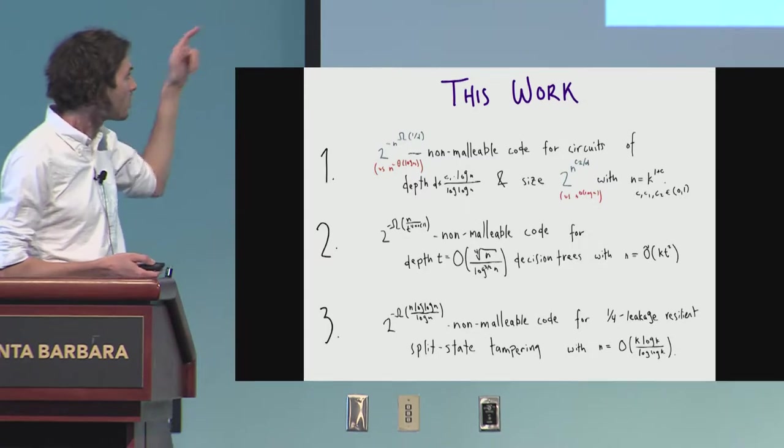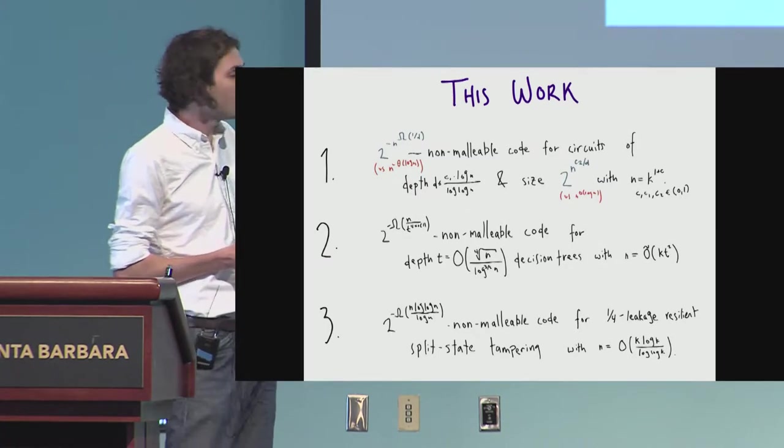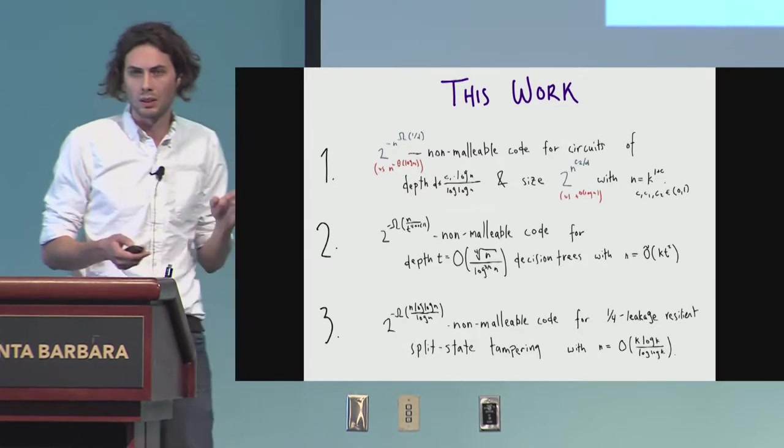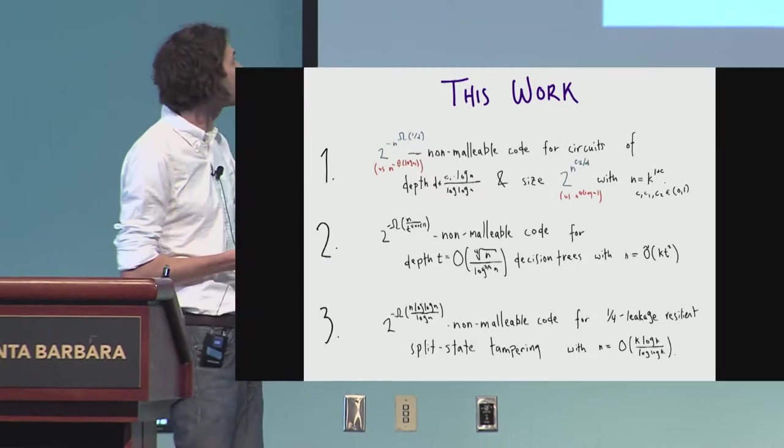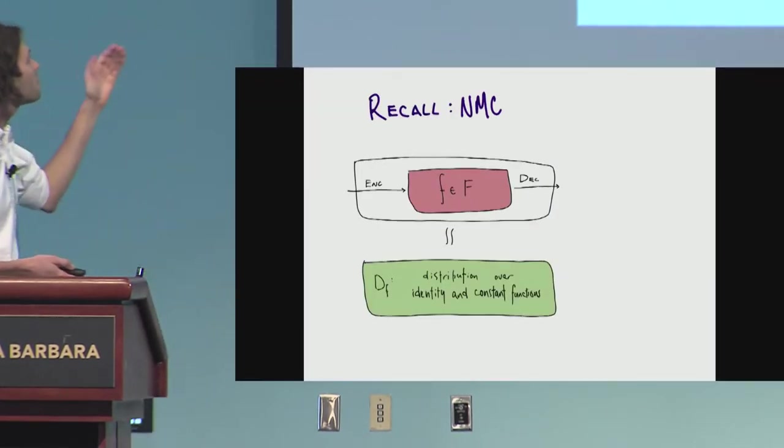And along the way, we construct two other codes, one for decision trees, and one for leakage-resilient split-state tampering, but I'll tell you more about that in a couple minutes. But first, I want to zoom in on this first theorem. How would you prove something like this? How would you construct such a non-malleable code?